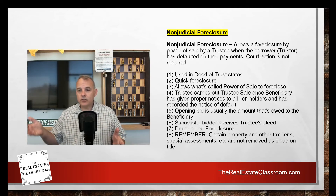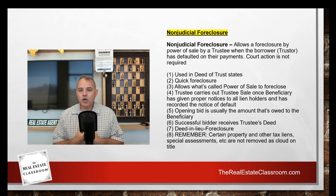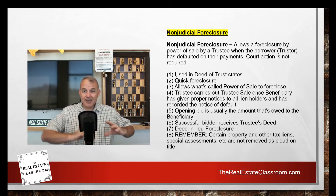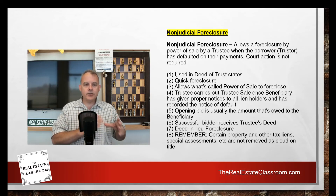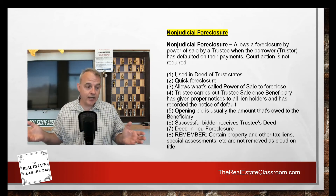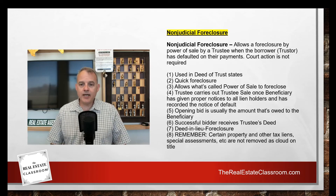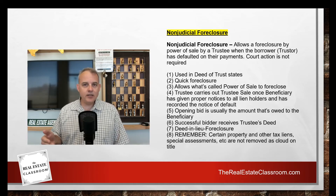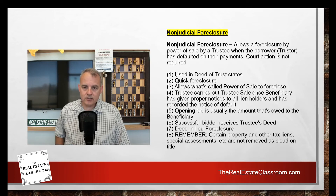Number four: the trustee carries out the trustee sale once the beneficiary has given proper notices to all lien holders of record on the property. There has to be integrity in the process — the lender will do a title search and send out notices to all lien holders that a trustee sale is moving forward. Once all notices have been delivered and the notice periods have been fulfilled — which can range from 30 to 90 to 120 days, depending on the state — the trustee sale can be scheduled.